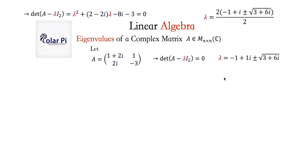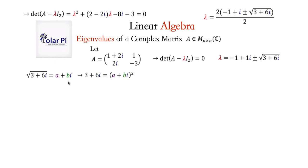Now we have to find the square root of the complex number 3 plus 6i. In my algebra 2 videos, I showed you how to find the square roots of complex numbers — in particular, a video dedicated to finding the square root of i. The work we're going to do to figure out the square root of 3 plus 6i will look much the same. We're going to use that same strategy: we claim that the square root of 3 plus 6i is just some complex number, which in standard form can be written as a plus bi. Then we square both sides.